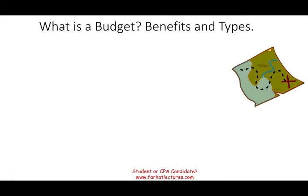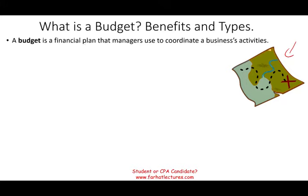First, we're going to talk about a budget. What is a budget? When you think of a budget, think of a map. A map charts the road for you from point A to point B, and this is basically what a budget looks like. It's a financial plan managers use to coordinate business activities — everyone working together to go from point A to point B, all working on the same goal.